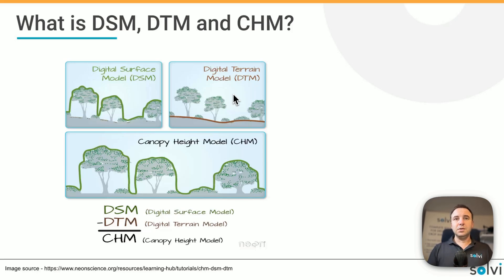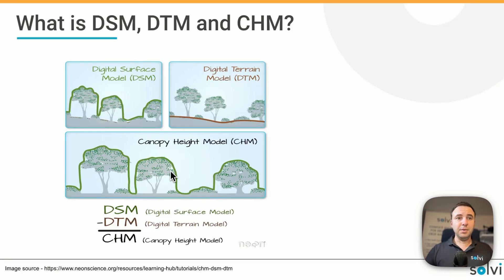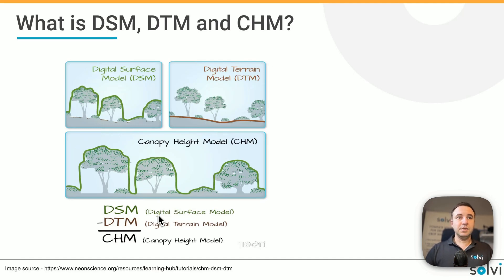The DTM only represents the terrain — just the ground without any objects on top of it. Now, to measure the height we want to focus just on the height of the crops without all the different possible variations in elevation. That's where the CHM comes in. By subtracting the DTM from the DSM we actually get the Canopy Height Model, which represents the height of the crops as if the surface the crops are grown on would be completely flat.